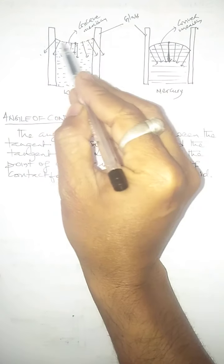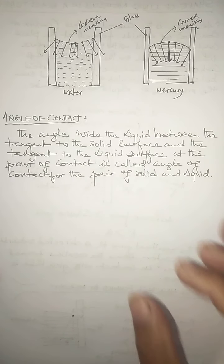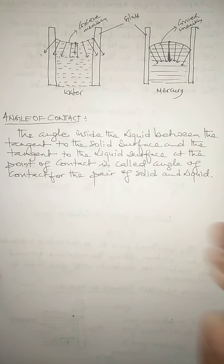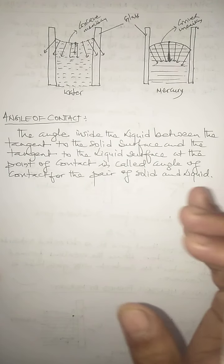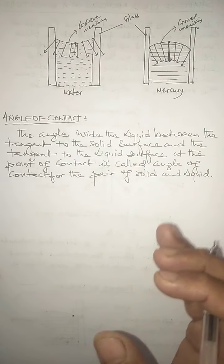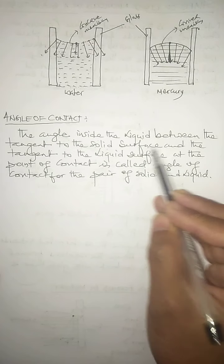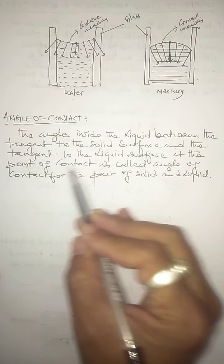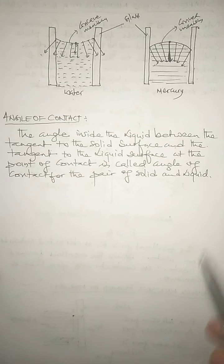When the free surface of the liquid comes in contact with a solid, a curved surface is formed at the point of contact. This curved surface is due to two forces that come into play — one is called cohesive force and the other is called adhesive force. There is a certain angle formed inside the liquid between the tangent to the solid surface and the tangent to the liquid surface at the point of contact, and this angle is called the angle of contact for the pair of solid and liquid.